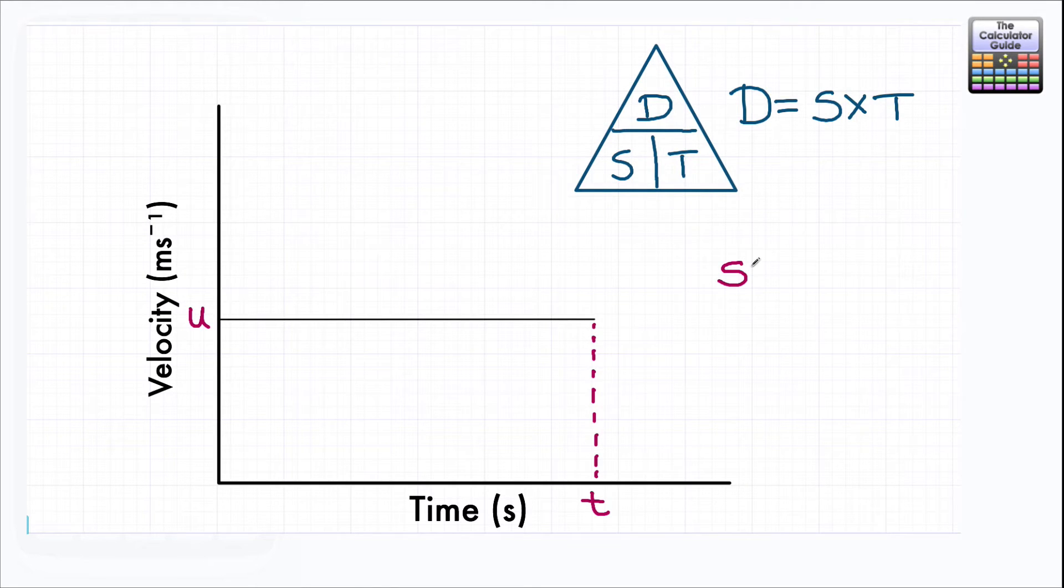So we're going to use the letter S not for speed but for displacement and it just differentiates it a little bit from distance. You can measure a distance as a displacement such as the distance a vehicle has travelled, but it could be referring to something such as the height of a bouncing ball. So it's nice to differentiate between the distance a car might travel and this displacement that we're going to be using.